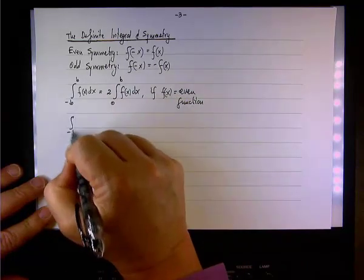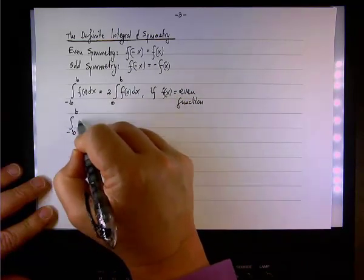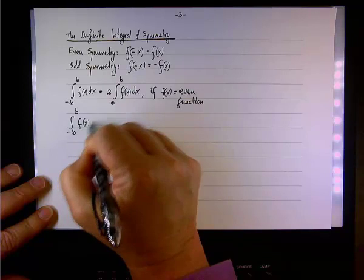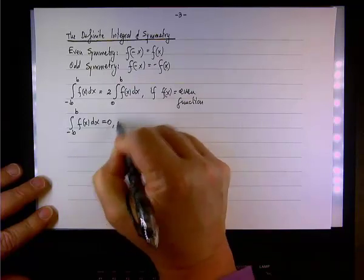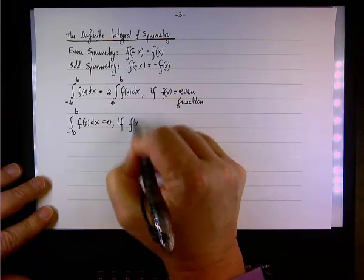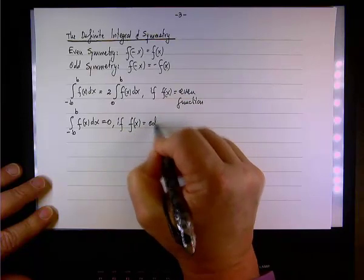And the integral from negative b to positive b of f of x dx equals 0 if f of x is an odd function.